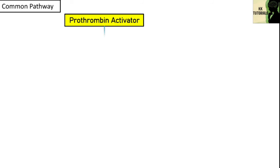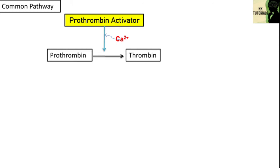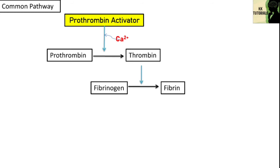In the presence of calcium ions, this prothrombin activator converts prothrombin into thrombin. And when a sufficient quantity of thrombin is formed in the blood, it leads to the conversion of fibrinogen to fibrin. These fibrins are monomers and they cannot form a stable clot.